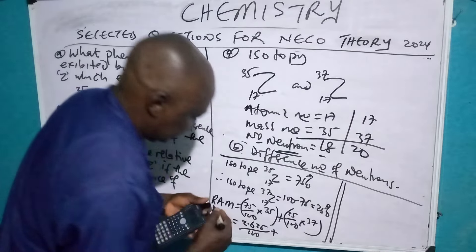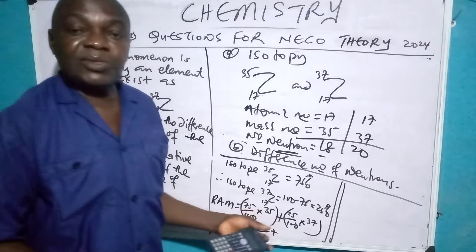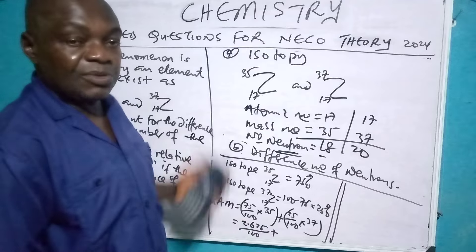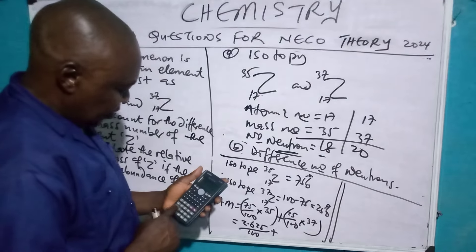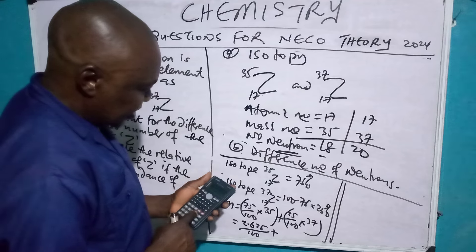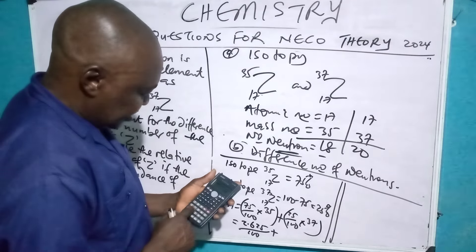Plus, if you don't want to use calculator, you can find the method of LCM. You still give you the same answer. You still get the same answer. 65 times 37.